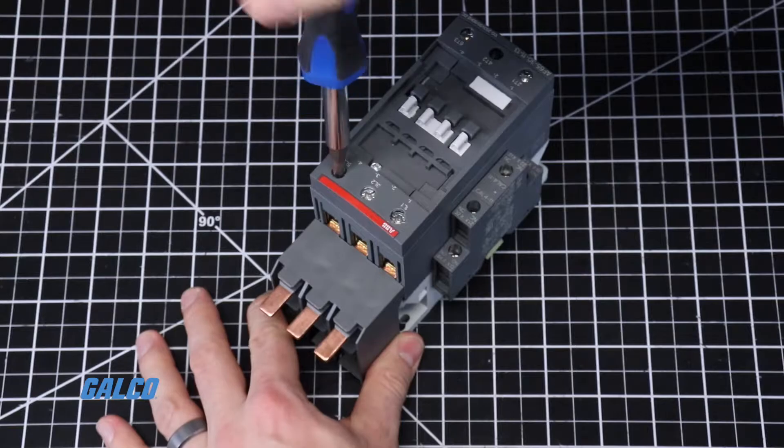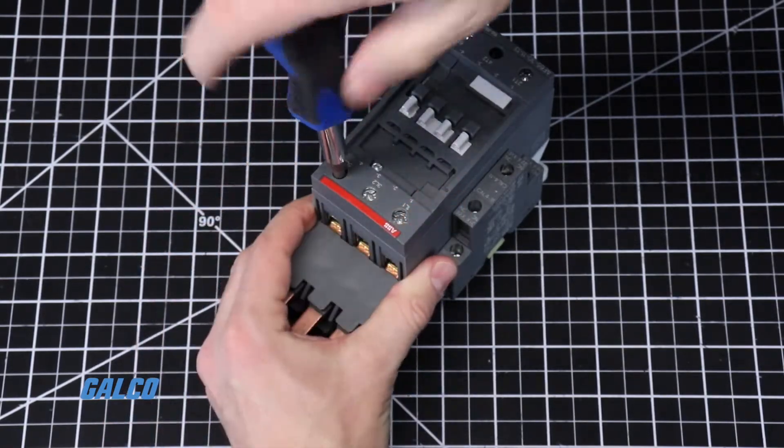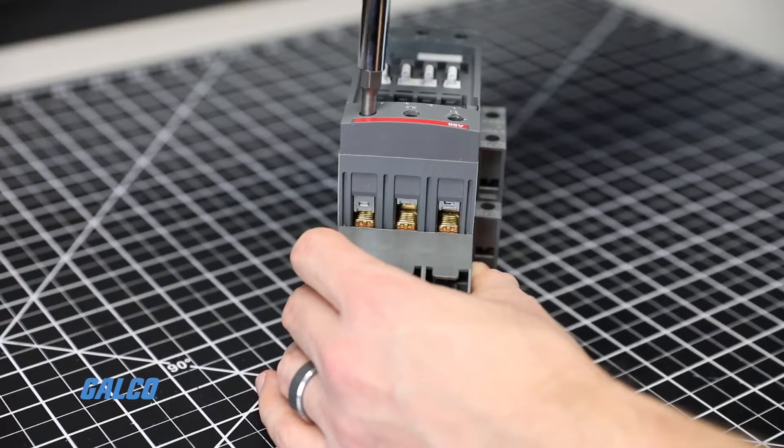Tighten the terminal screws so that both sides of the terminals on the contactor close around the bus bar module.